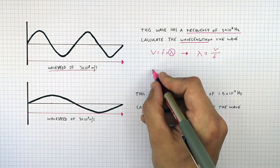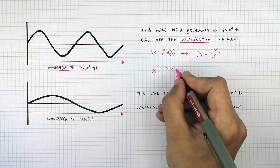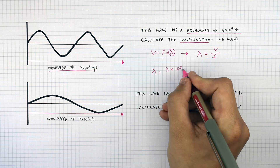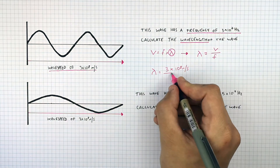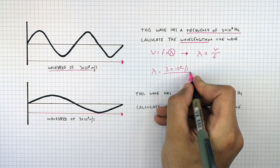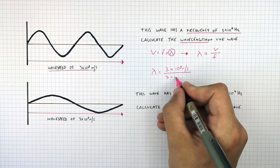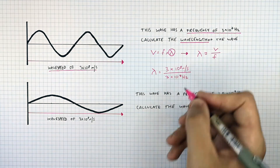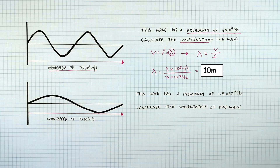Now we've rearranged for wavelength, substitute in the numbers. Wavelength equals 3 times 10 to the power of 8 metres per second — which is V, the wave speed — divided by the frequency f, 3 times 10 to the power of 7 hertz. That gives you an answer of a wavelength of 10 metres.